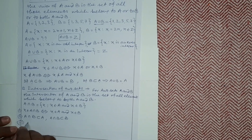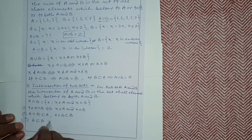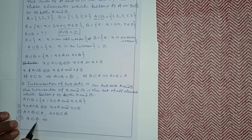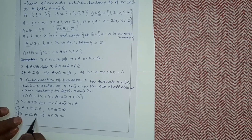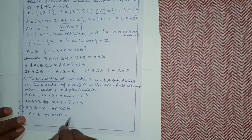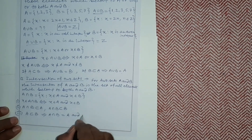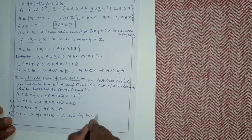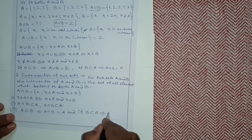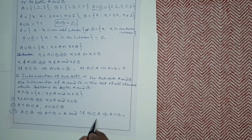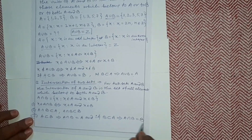Third conclusion: if A is a subset of B, that means all elements of A are in B, so A intersection B equals A — since the common elements between A and B will be exactly A. Similarly, if B is a subset of A, that means all elements of B are in A, so A intersection B equals B.